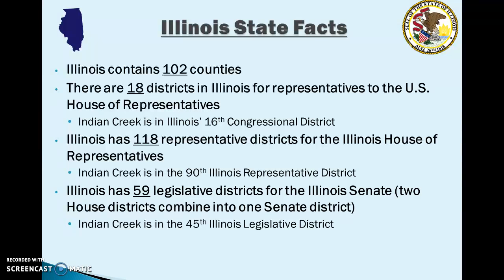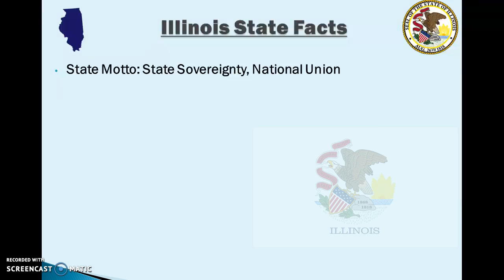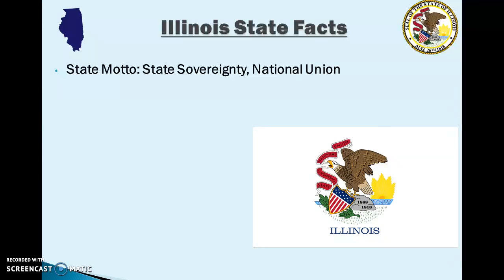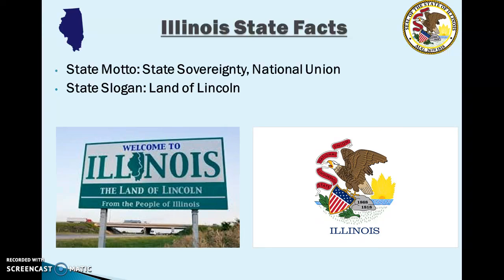These are important things to keep in mind, especially in the future when you're voting, so you know which districts you live in and which candidates to pay attention to. The state motto of Illinois is 'State Sovereignty, National Union,' which you can see on the red ribbon the eagle is carrying on the state flag. Our state slogan is 'The Land of Lincoln,' and the state nickname of Illinois is 'The Prairie State.'